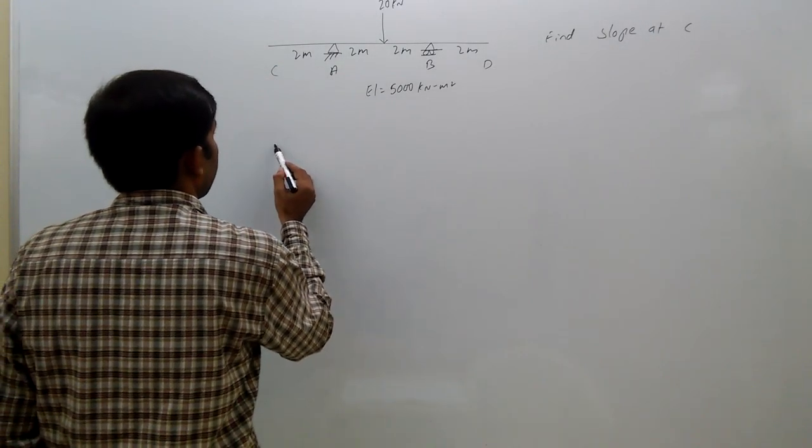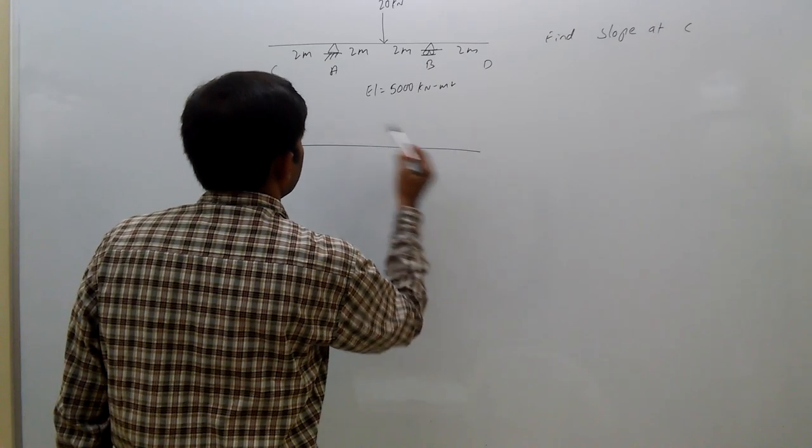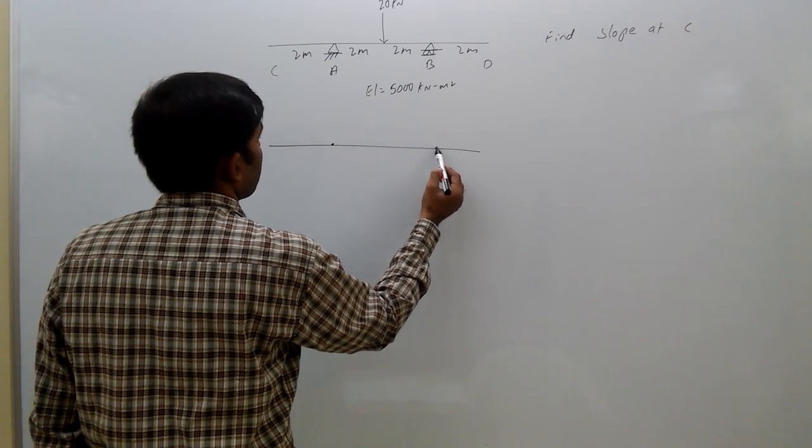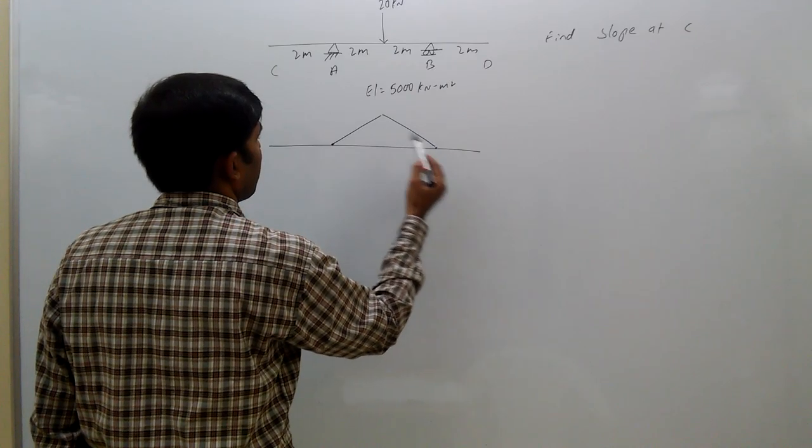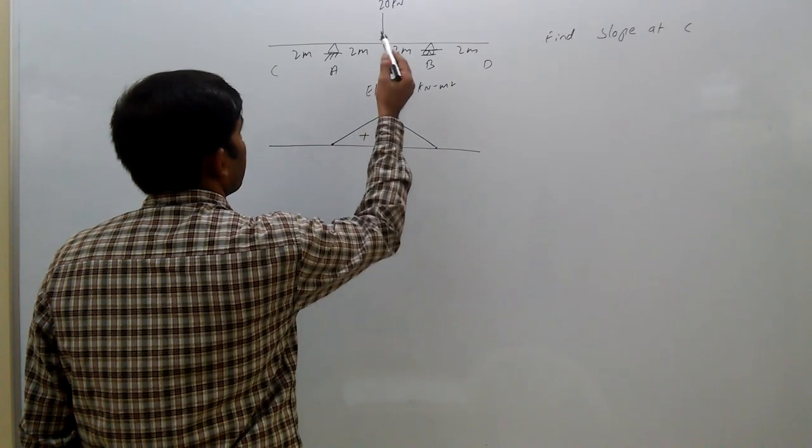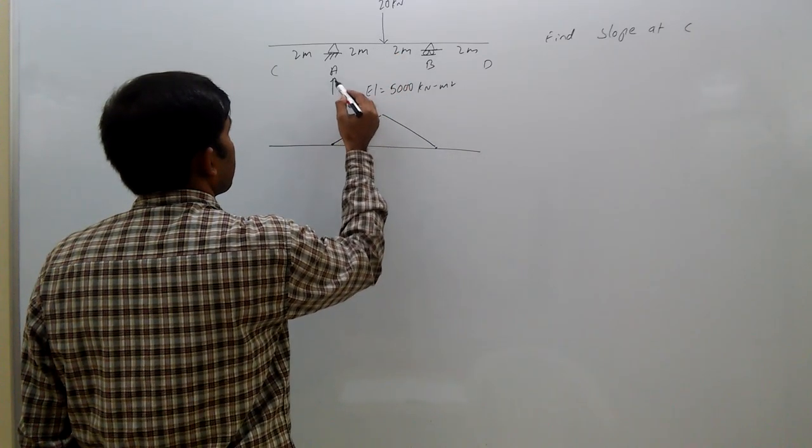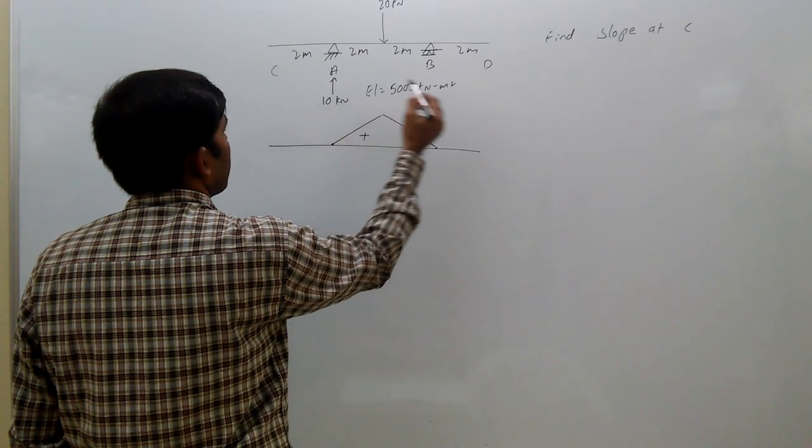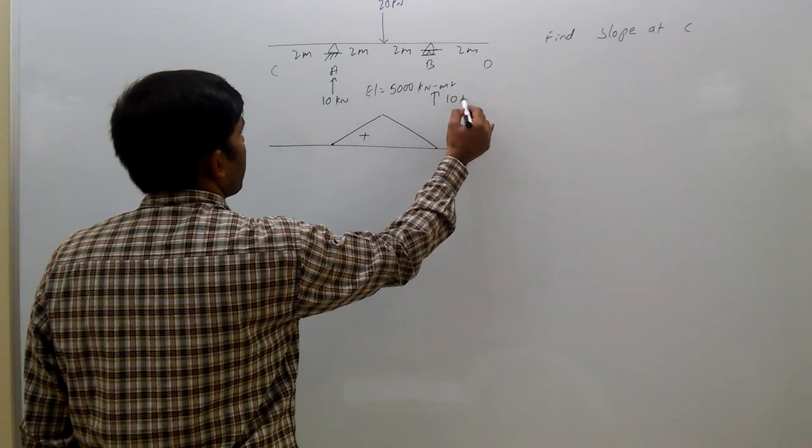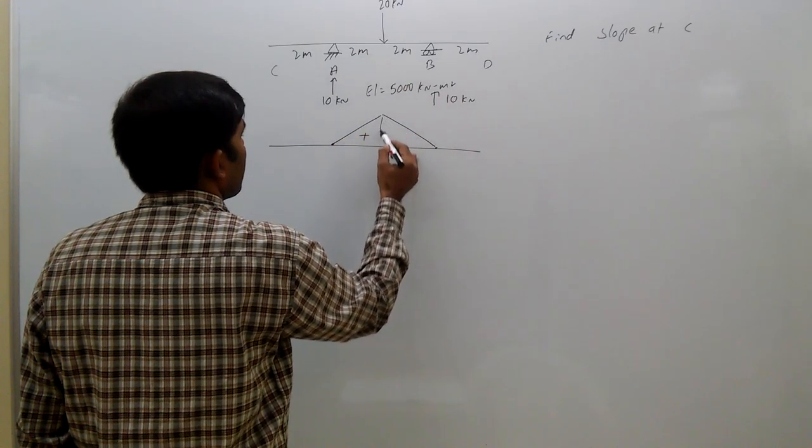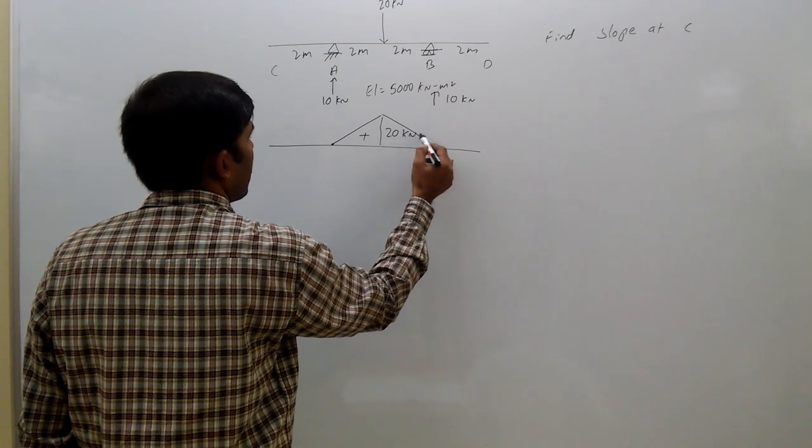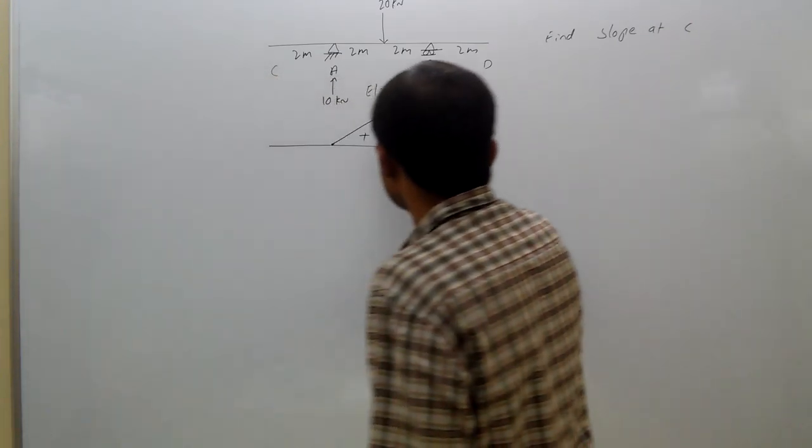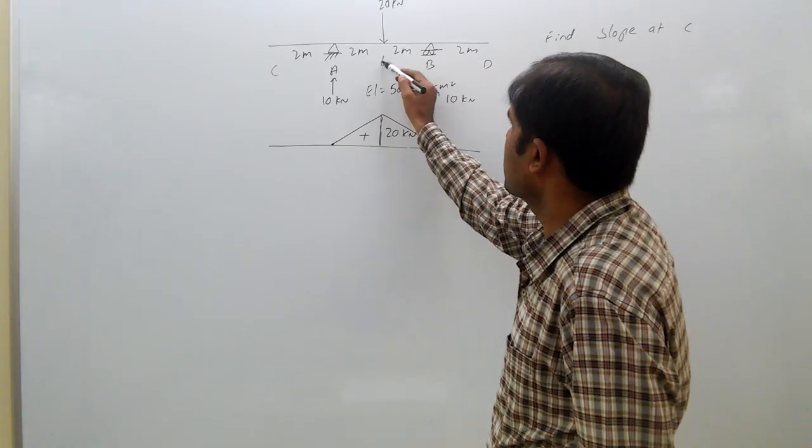Now bending moment diagram is like this, positive. Here reaction is 10 kWh, here also reaction 10 kWh, so 10 into 2, 20 kWh is the maximum moment at center, at the point E.